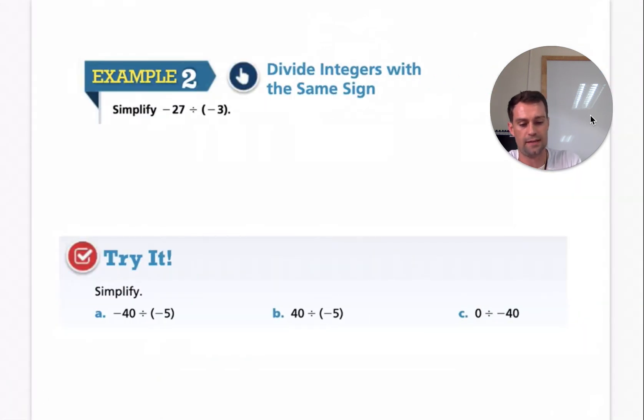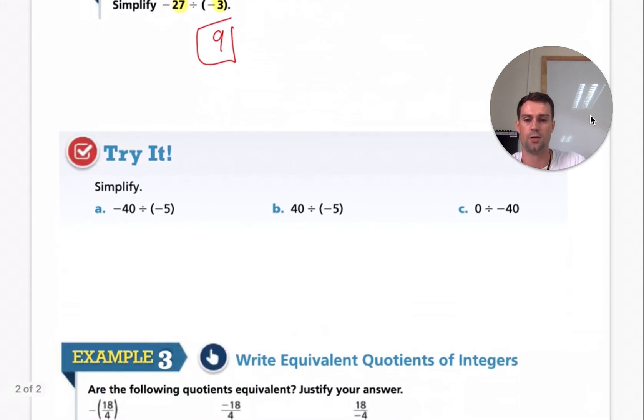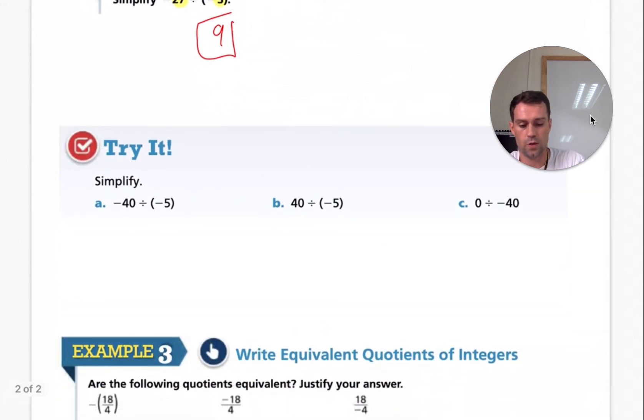All right. So you're going to go ahead and simplify this. So we can simplify 27 divided by three is going to give us nine. Negative divided by a negative is positive. So it is just positive nine. So your answer is positive nine. That's it. Go ahead and try these on your own. So this one here will be 40 divided by five is eight. Negative divided by negative is positive. So we know that it will be a positive eight.